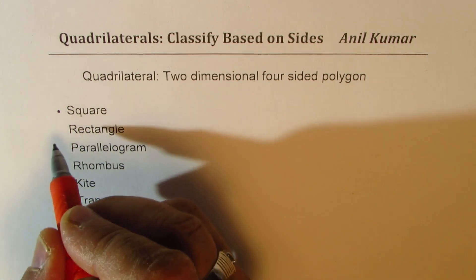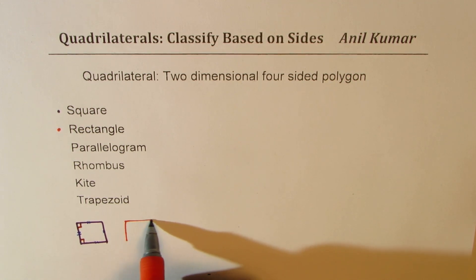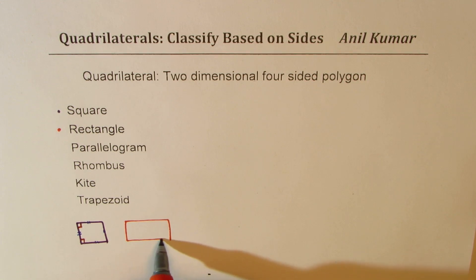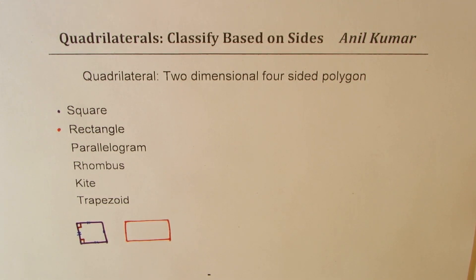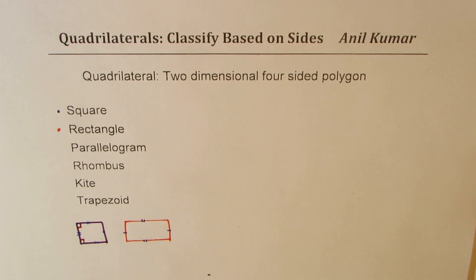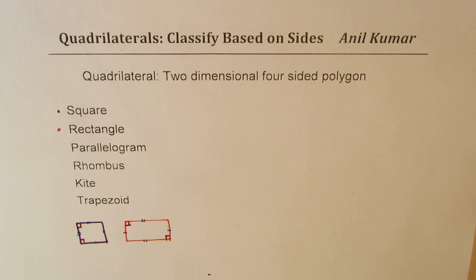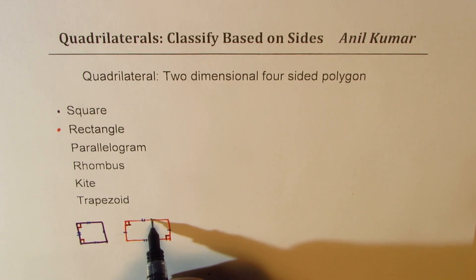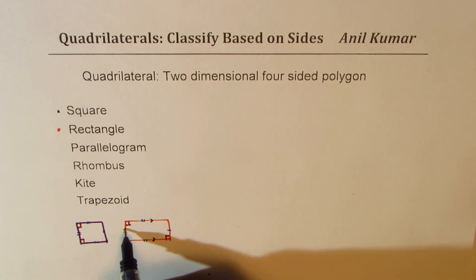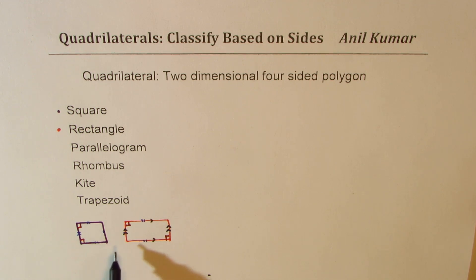Now when we talk about a rectangle, two opposite pairs are parallel and equal in length. So two pairs of sides are equal, and as in the previous case, the lines intersect at 90 degrees. Opposite sides are also parallel. So a square can also be classified as a rectangle — a very special rectangle in which all sides are equal.